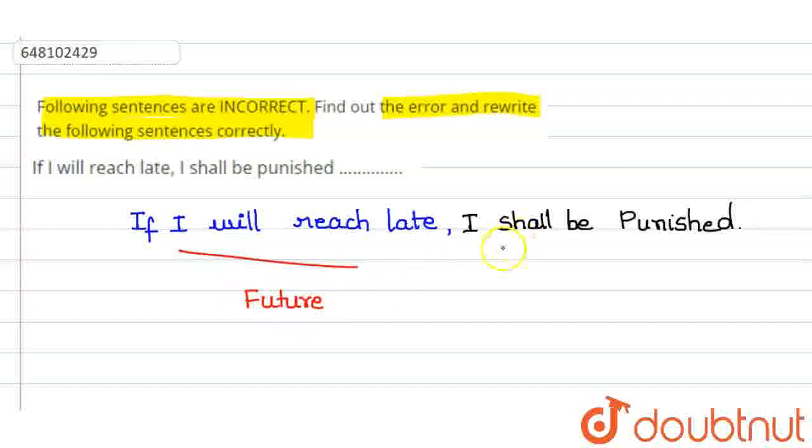But here what it is given, I shall be punished. So, here what we have to add, it is already given, the auxiliary verb is shall here.